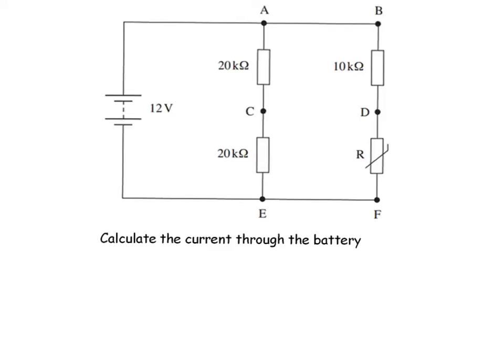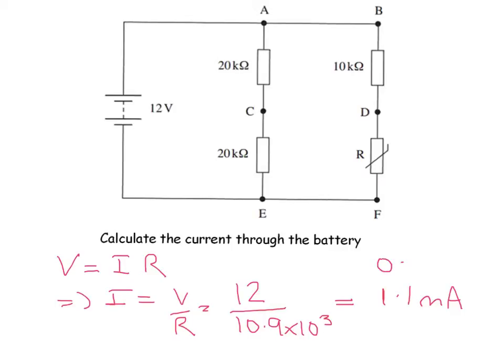So the next part asks you to calculate the current through your battery. So applying our Ohm's law here, V equals IR, so that obviously means slightly rearranging it, I equals V over R, and the voltage is 12, and the total resistance of the circuit we've just calculated as 10.9. Remember that was in kilo-ohms, so we need to times it by 10 to the power of 3. So that gives you a current of 1.1 milliamps, because you ended up with a very small number, so I converted that into milliamps, or if you want to, it would be 0.0011 amps.